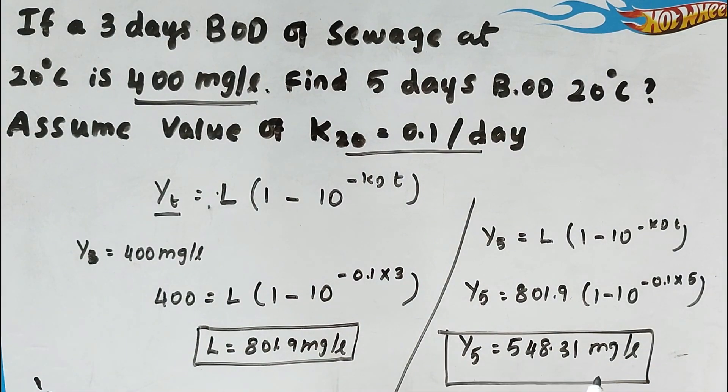So this is the BOD of sewage sample after 5 days. So that is 548.31 milligram per liter. So this is the method we can solve the problem. Again we will see next video, thank you.